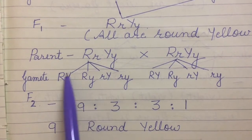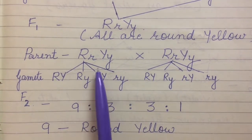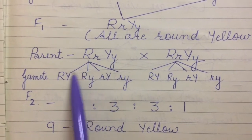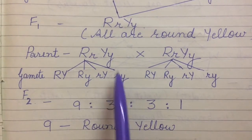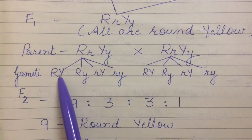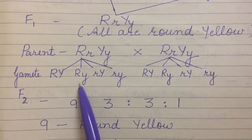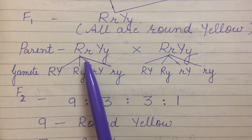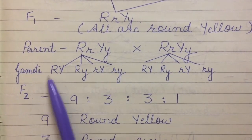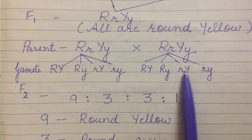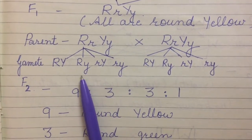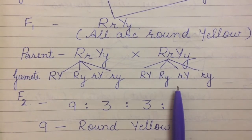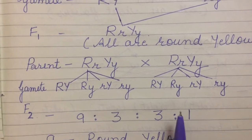Now we will take two individuals from F1 generation. When they will reproduce, four different types of gametes will be formed. Similarly, small r and small r can also combine with small y. Similar type of four possibilities are possible here also. Yeh in parents se 4 different types ke gametes ban sakte hain. Jab yeh gametes aapas mein fuse karenge, to isse 16 possibilities banegi, which I will show you on the next page.